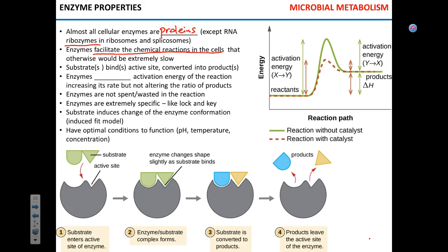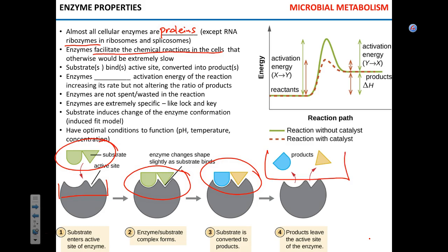How does a reaction happen? The substrate binds to the active site of the enzyme. The active site adjusts its shape — changes conformation. Then amino acids in the active site weaken the chemical bonds in the substrate, so the substrate can be converted into products. The enzyme facilitates the reaction.